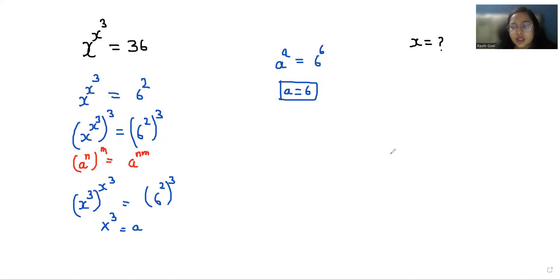So as we know we took a substitution, so let's put x^3 = a. x^3 = 6. Now I'm going to divide with power 3 both sides.